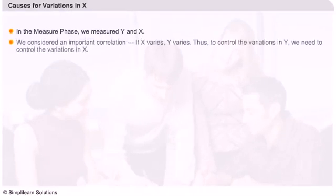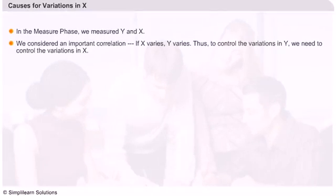In this session, we will talk about why X varies. In the Measure Phase, we have already measured Y. And by the end of Measure Phase, we have also given some kind of validation and correlation of an X with Y. That gave us to think that if X varies, Y varies. Thus, to control the variations in Y, we need to control the variations in X.